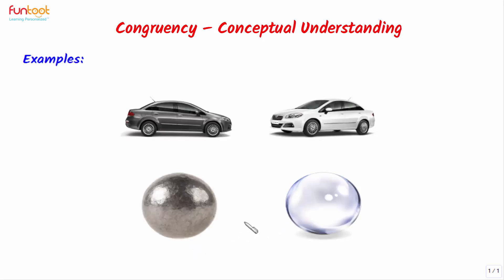Here we have two spheres of the same radius. One is made up of metal and the other one is made up of glass. Are they congruent? Yes, they are congruent because their shape and size are the same. But can we say they are identical? No, they are not identical because one sphere is made up of metal and the other one is made up of glass. Their materials are different, so how can they be identical?